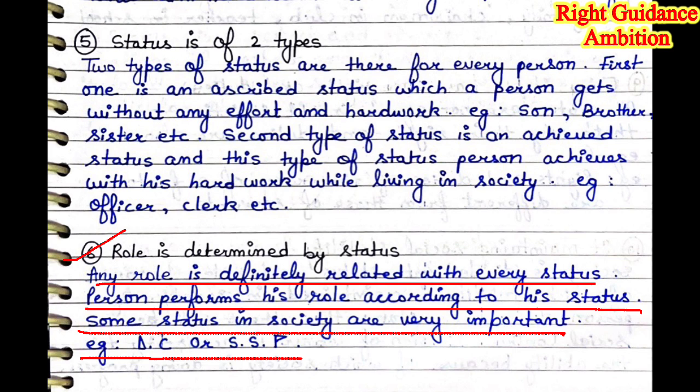Sixth point: role is determined by status. Any role is definitely related with every status. Every person has a status, and with each status, there is a role to play. For example, in a family we have father, mother, brother, sister — these are all statuses we are given. Every status has a role that we play in society. A person performs their role according to their status. Some statuses in society are very important. Like DC (District Collector) and SSP — some statuses like IAS and IPS officers are important statuses that play a very important role in society.